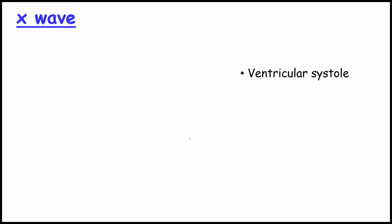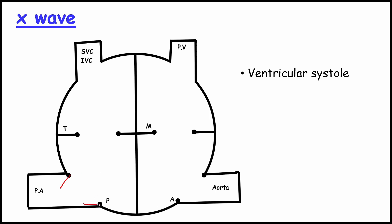Next X wave. It happens in ventricular systole. Aortic and pulmonary valve will open. So the blood rush into the vessels. Pressure in the ventricle becomes decreased. This causes the valve come back its normal position. So there will be a downward blood movement.